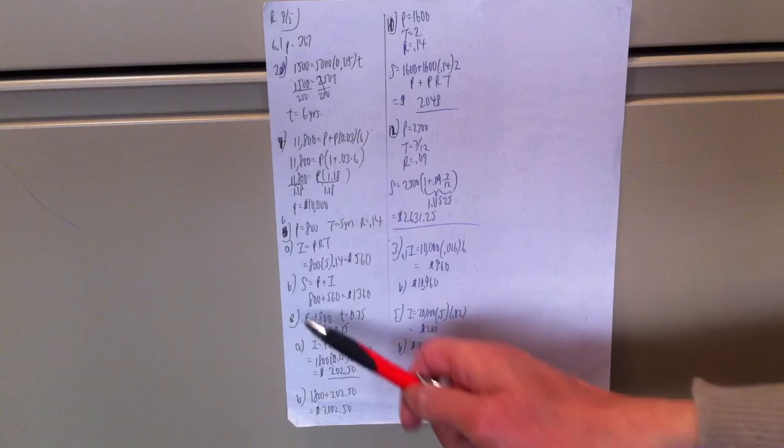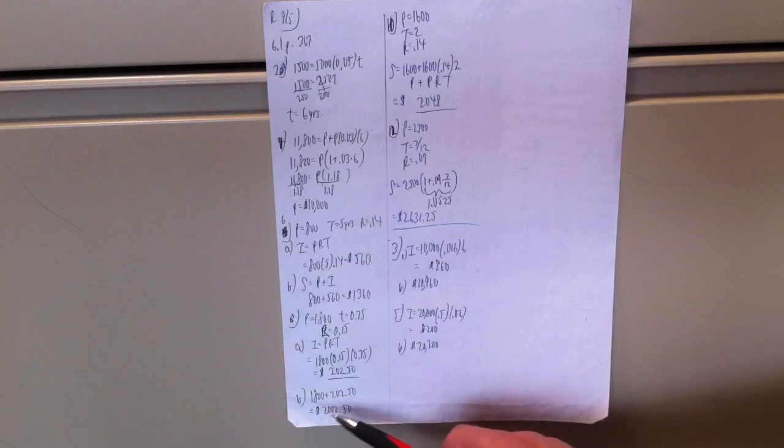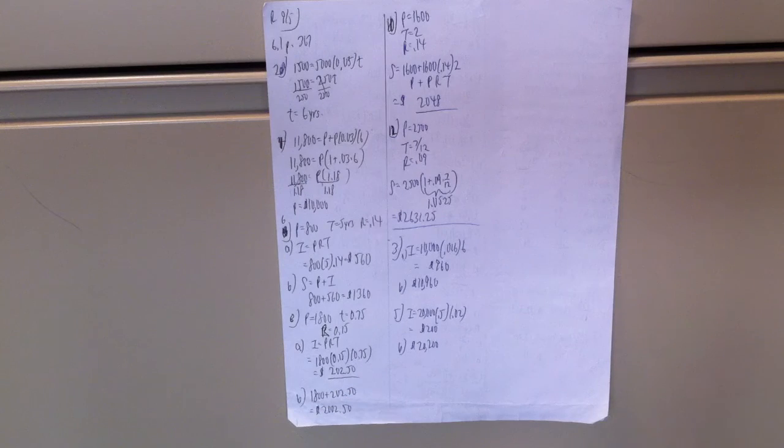Part B. The S, the future value, is the principal, 1800, plus the new interest that we just found, 202.50. Comes out to be $2,002.50.